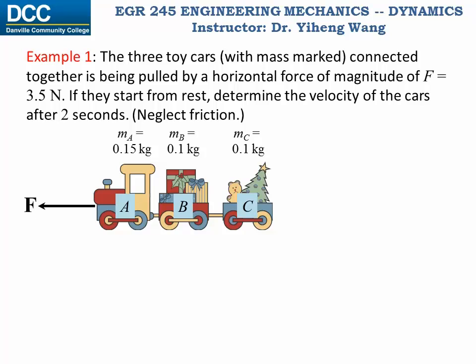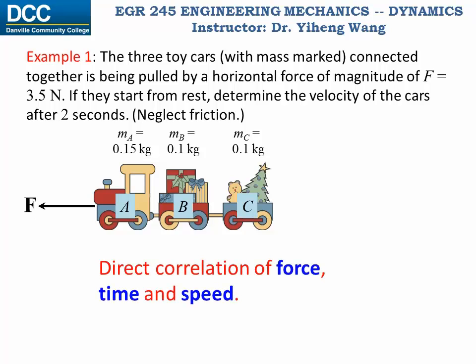Let's revisit a slightly modified example worked on before using equations of motion. Three toy cars are connected together and pulled by a constant force of 3.5 newtons; we need to determine their velocity after two seconds. Since we're looking at a direct correlation of force, time, and speed, the most ideal approach is the principle of linear impulse and momentum.